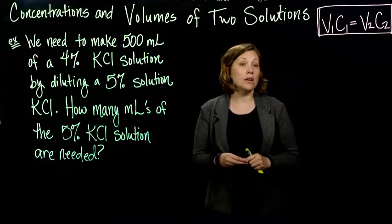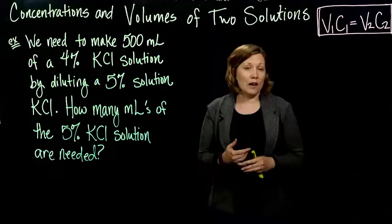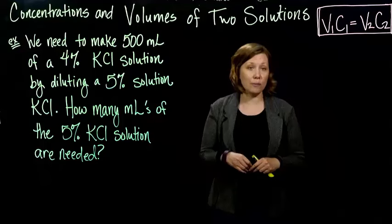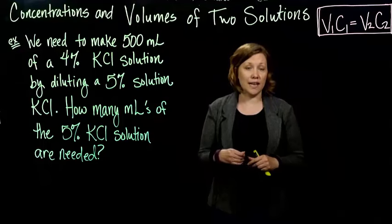So we have another example. This time we need to make 500 milliliters of a 4% potassium chloride solution by diluting a 5% solution of potassium chloride.